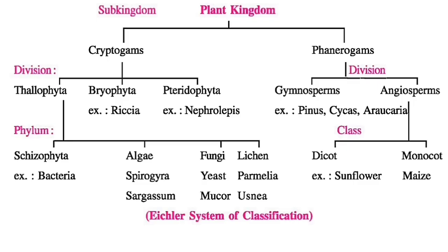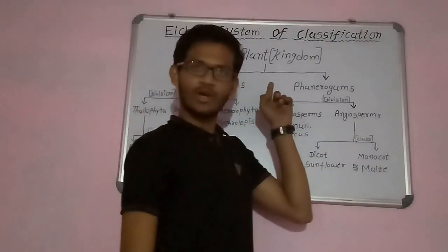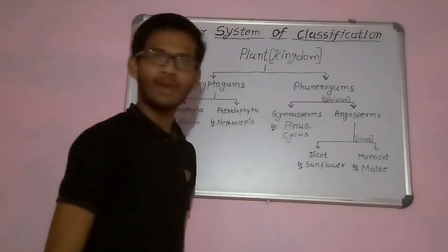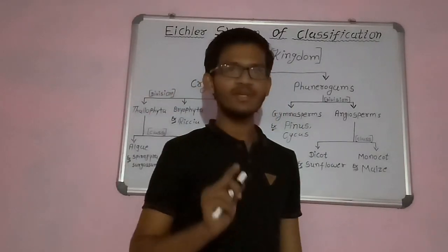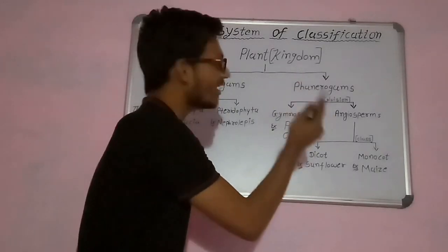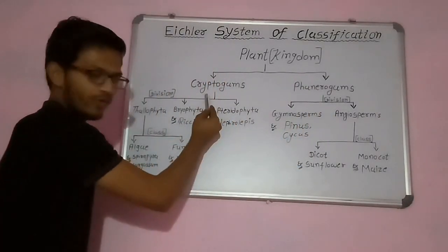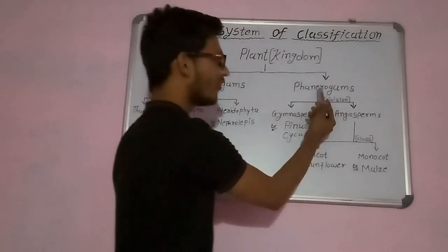Here we've seen one chart which is a system of classification. The first point is Kingdom Plantae. Plantae means they contain chlorophyll. Plantae are divided into two sub-kingdoms: the first one is Cryptogams and the second one is Phanerogams.